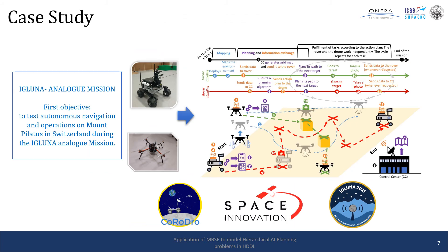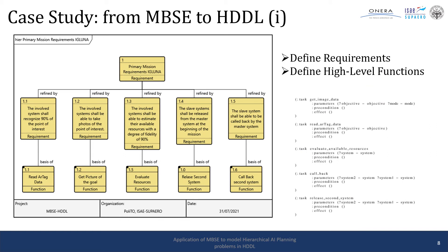For the case study, we used the MBSE-to-HDDL translation to define a plan for a rover and a drone during the IGRUNA Analog mission. This analog mission is organized by the Space Innovation ISAT Lab Initiative in Switzerland. The mission involves two systems — a rover and a drone — that collaborate to explore an environment. We started from the MBSE model of this mission, translated it into HDDL, and created a plan for the two systems to explore the environment, go to points of interest, take photos, and conduct science activities. The set of requirements includes: recognize a point of interest, take a picture, evaluate remaining resources, release the secondary system (the drone), and call back the drone.